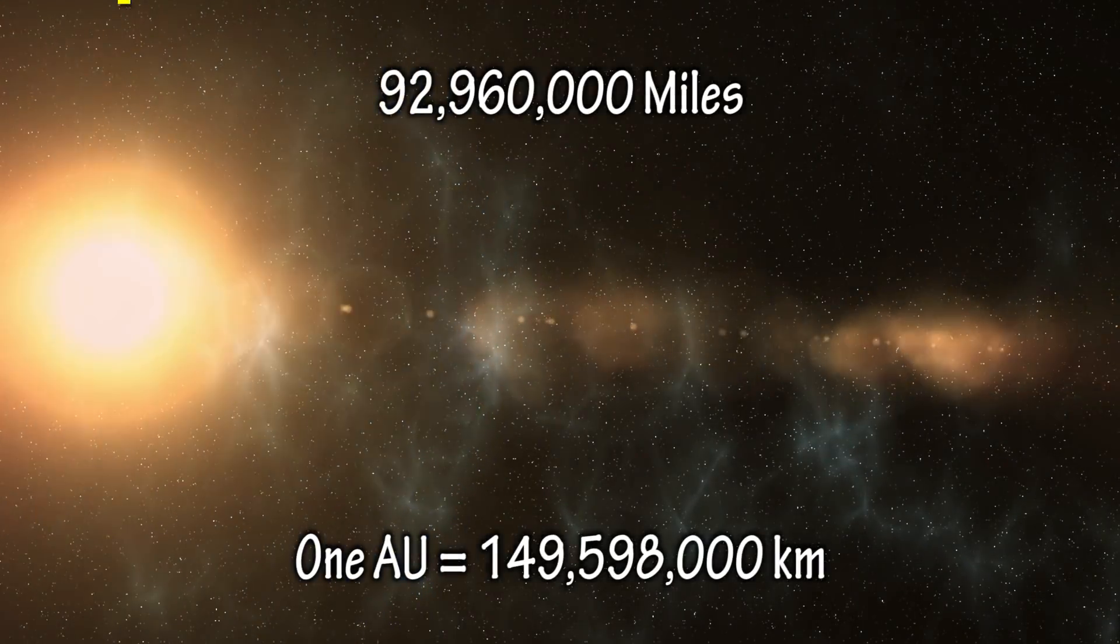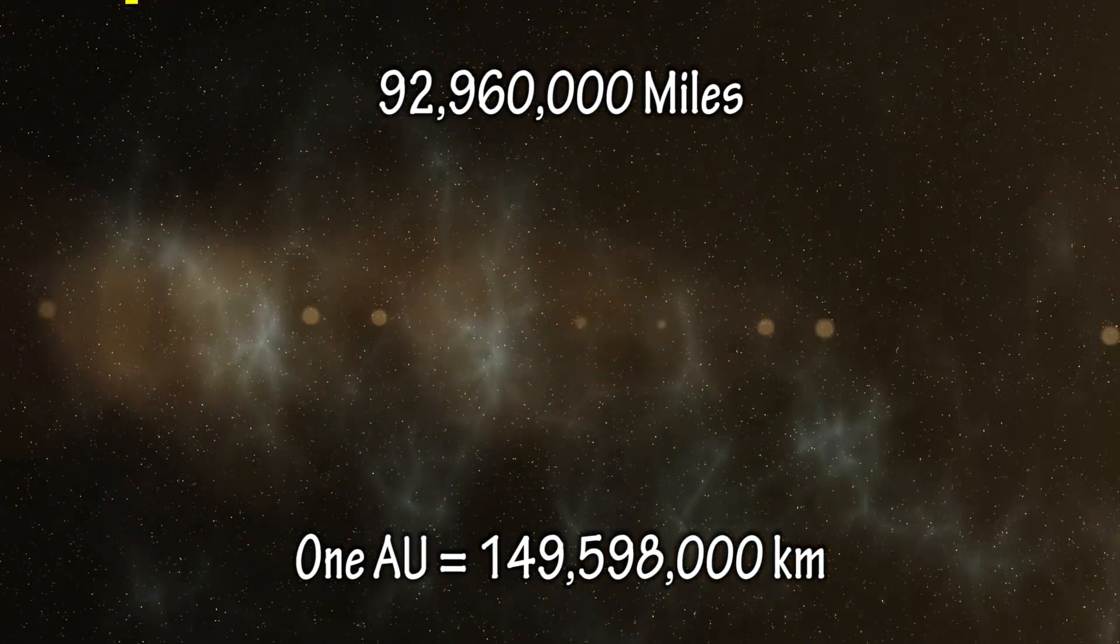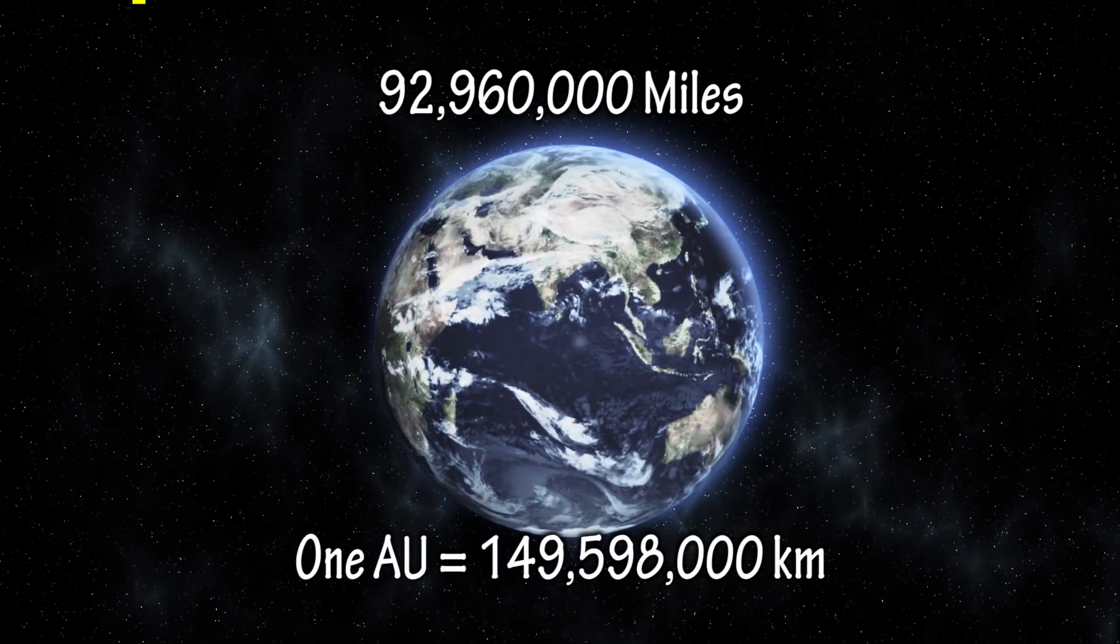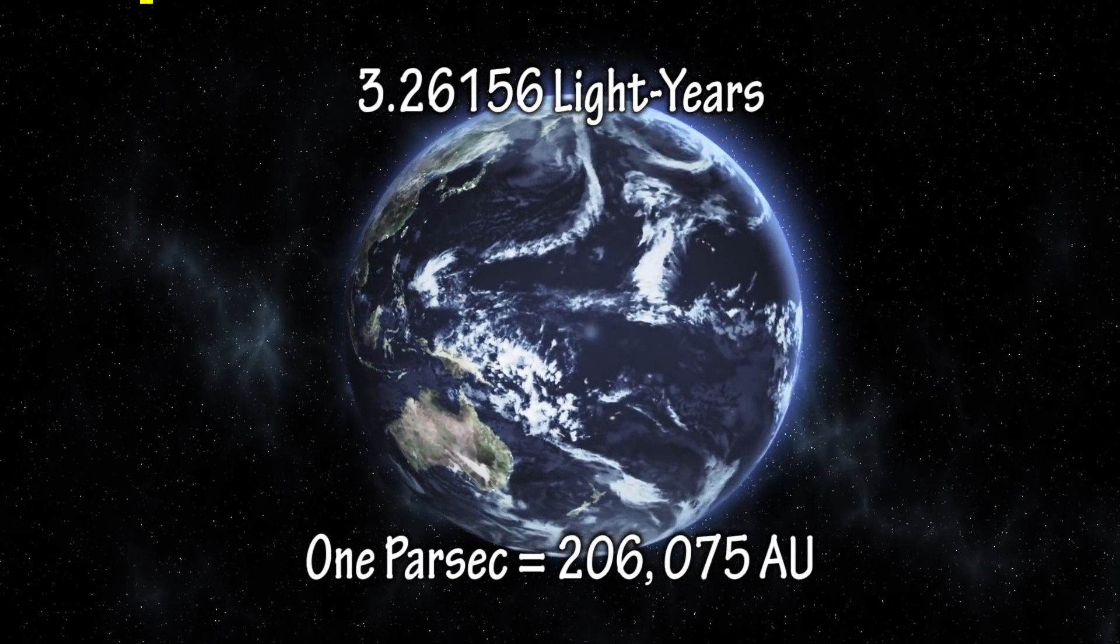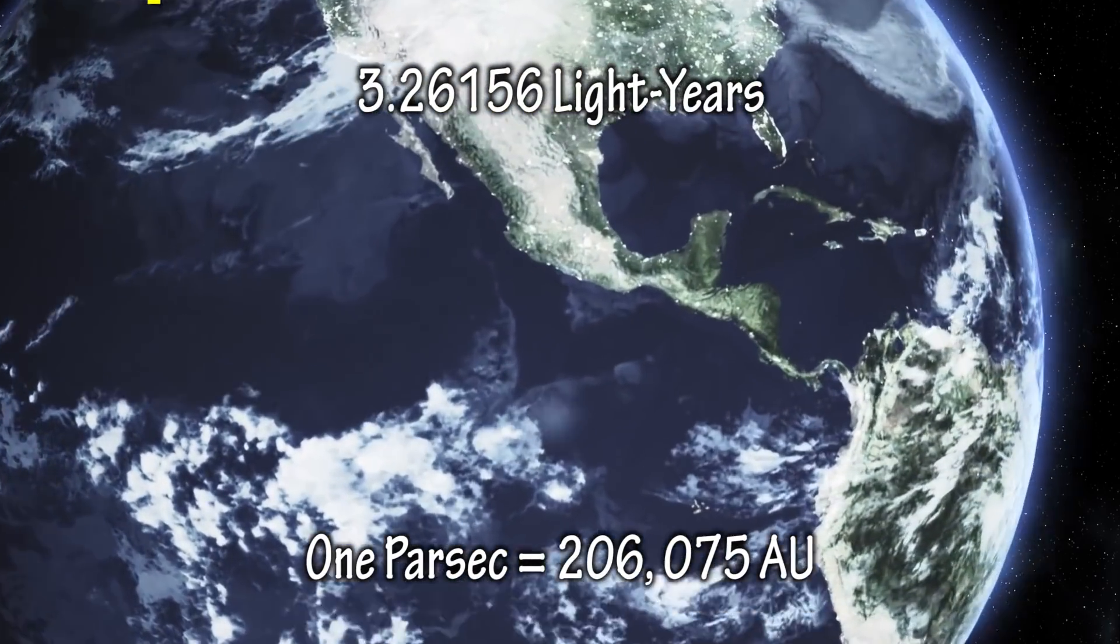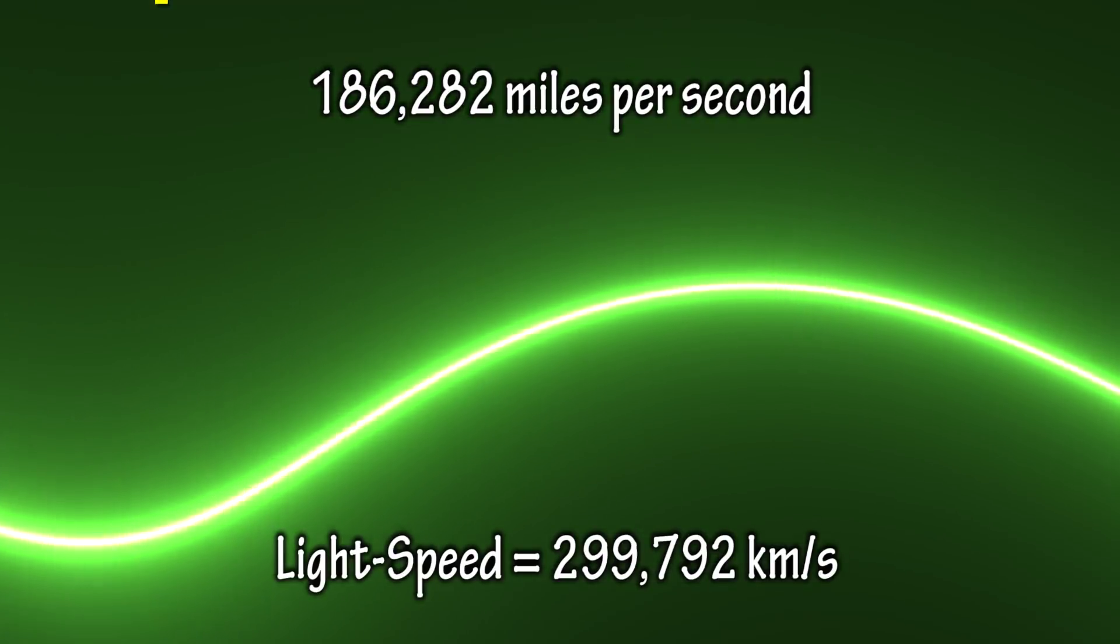One astronomical unit, or AU, is the average distance from Earth to the Sun, 149 million kilometers. The parsec is also measured in astronomical units. One parsec is equivalent to about 206,000 astronomical units. That's about 3.26 light years.